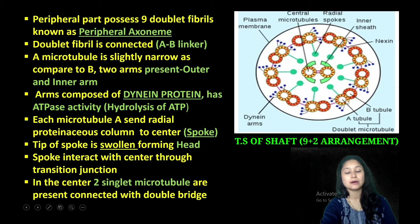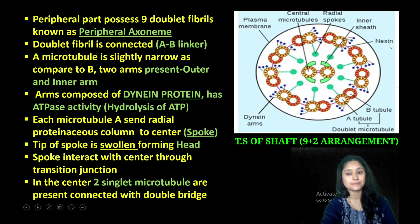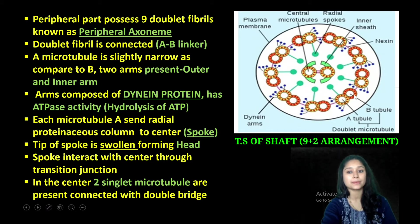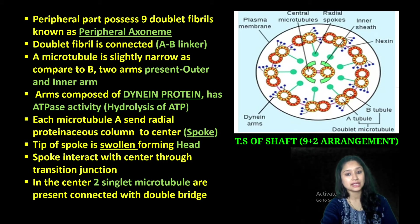A microtubule of one is connected with B of another — so this linker ka naam hai AB linker. And this AB linker is composed of protein that is nexin. Ye jo A microtubule hai, it is going to be slightly narrow as compared to B microtubule. Yahaan pe aapko nazar aa raha hai — two arms are present: this is going to be the inner arm and this is going to be the outer arm of microtubule.